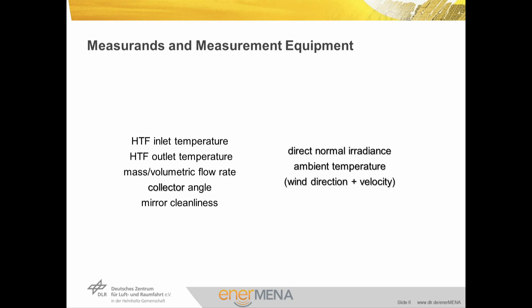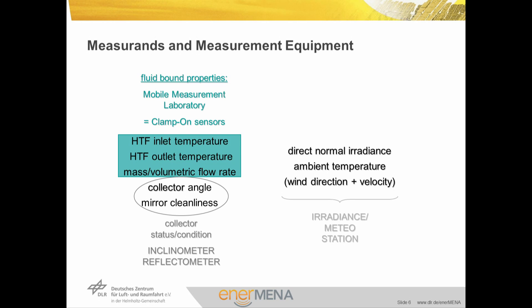The required measurements can be subdivided into two different categories: those related to ambient conditions, like irradiance, ambient temperature and wind direction and velocity, and properties of the HTF or the parabolic trough collector itself, such as the HTF flow rate and temperature, or cleanliness and collector angle. The measurement of ambient conditions is usually carried out using a mobile irradiance or meteorological station. The collector angle and mirror cleanliness are monitored using inclinometers and a reflectometer. The HTF inlet and outlet temperatures, as well as the mass flow rate, are fluid-bound properties that can only be measured using clamp-on sensors within the mobile measurement laboratory.